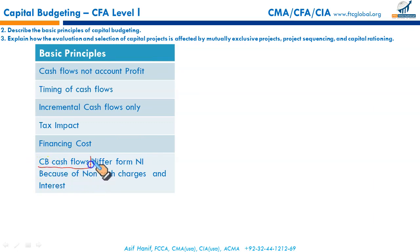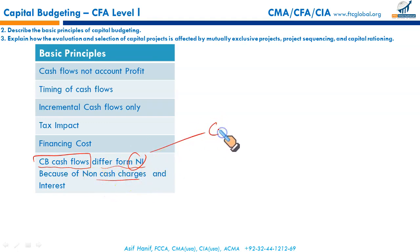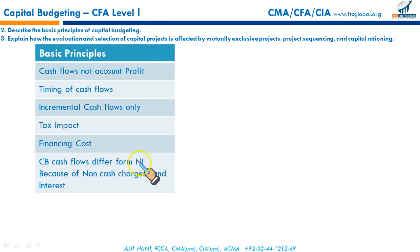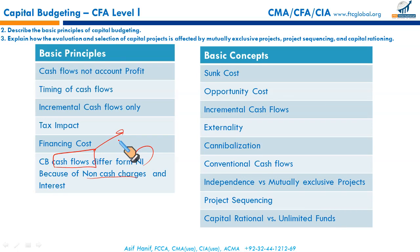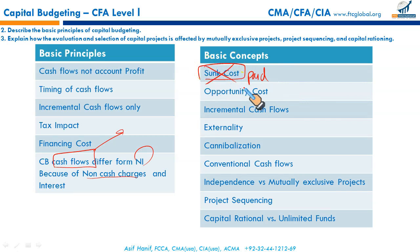Capital budgeting considers cash flows only. Cash flows differ from net income because net income might include non-cash charges like depreciation, amortization of bond discount, and loss on disposals — certain non-cash gains and losses recognized in income. Since net income includes many non-cash charges, it differs from cash flow, so in capital budgeting we consider cash flows only. Sunk cost is a cost that has already been paid — it is irrelevant and ignored in decision-making.